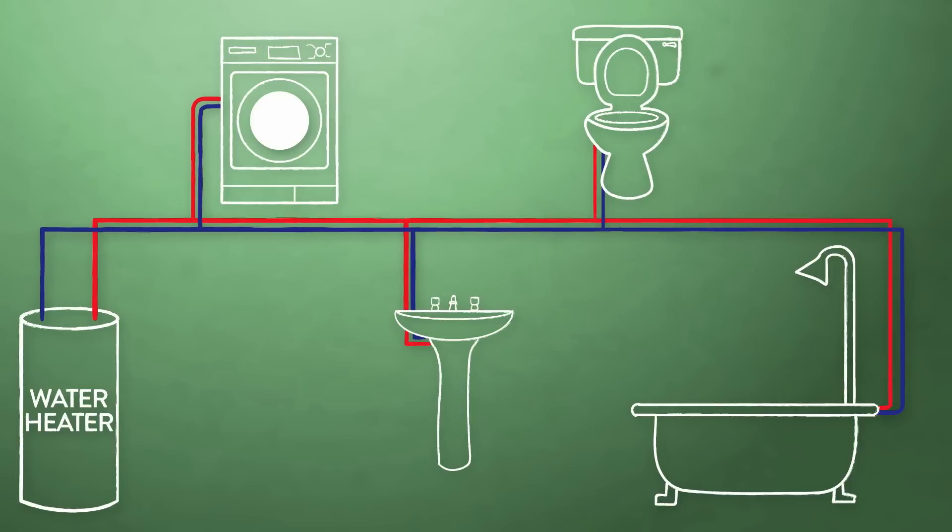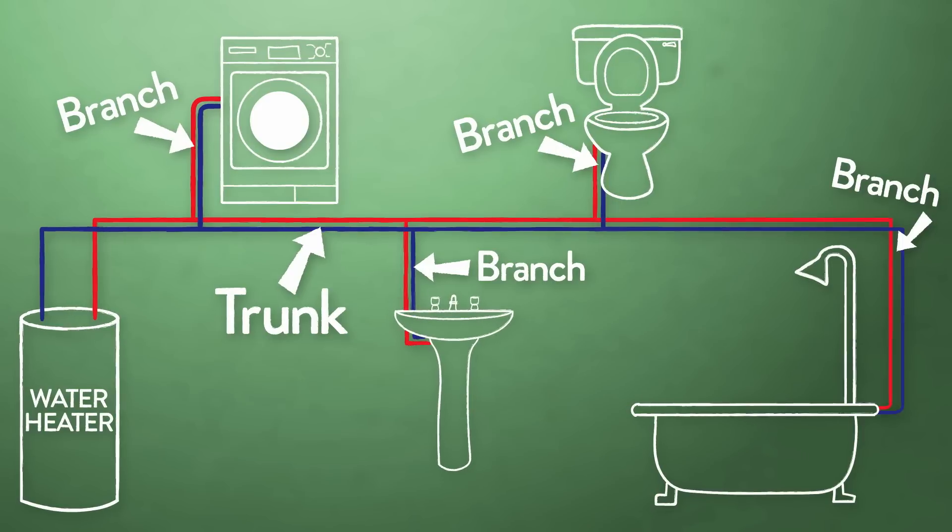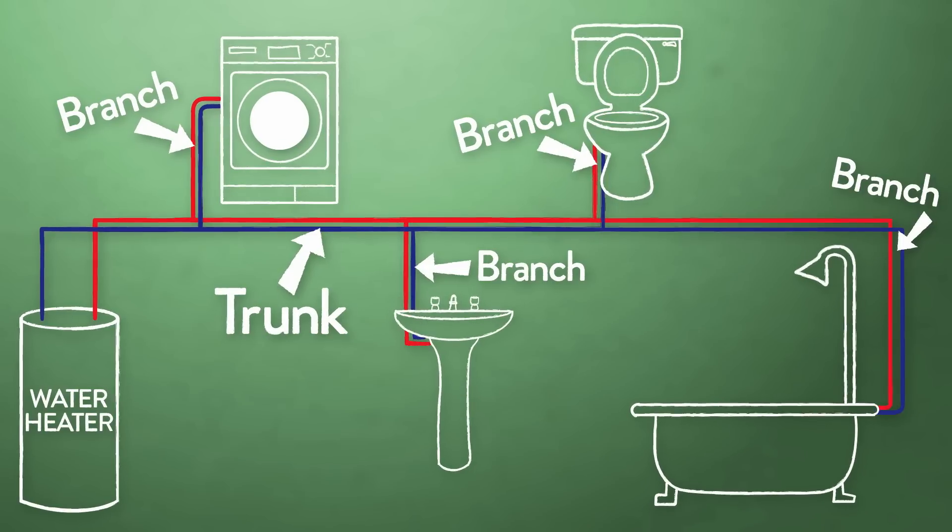A common configuration of pipes in homes is what's called a trunk and branch system. It's like a tree with one large pipe, the trunk, that has several smaller pipes branching off to things like your sink, laundry machine, shower, or your toilet. If one of this pipe tree's branches needs water, like when you flush your toilet, there's less water available for the other branches on the tree.